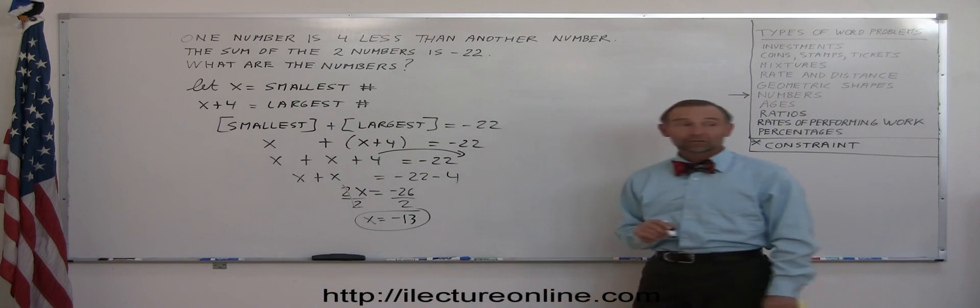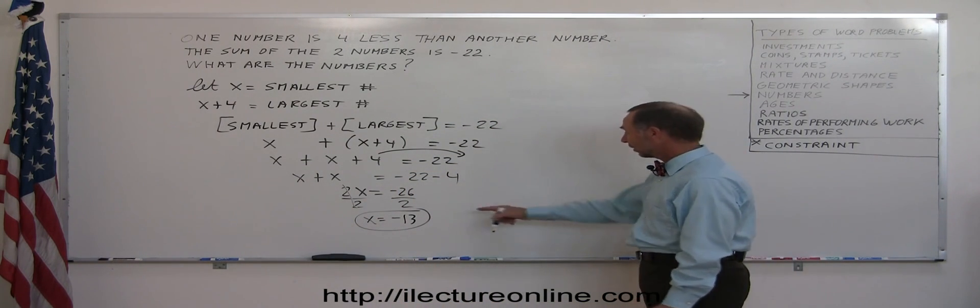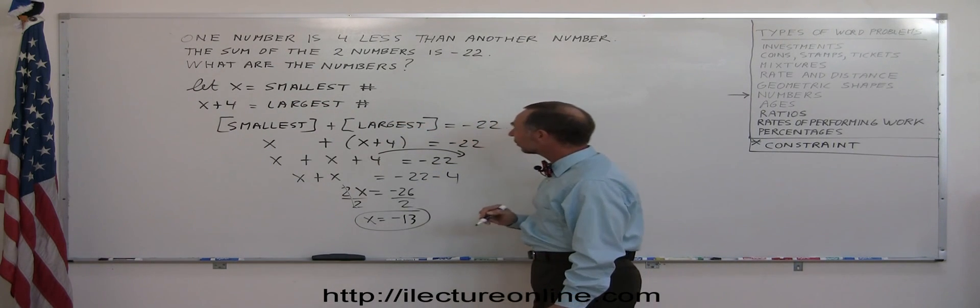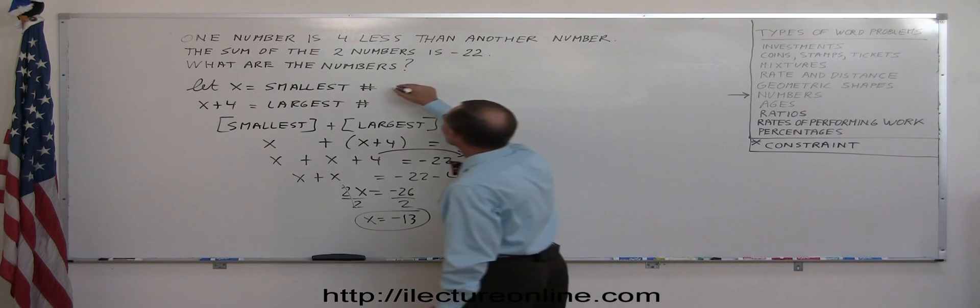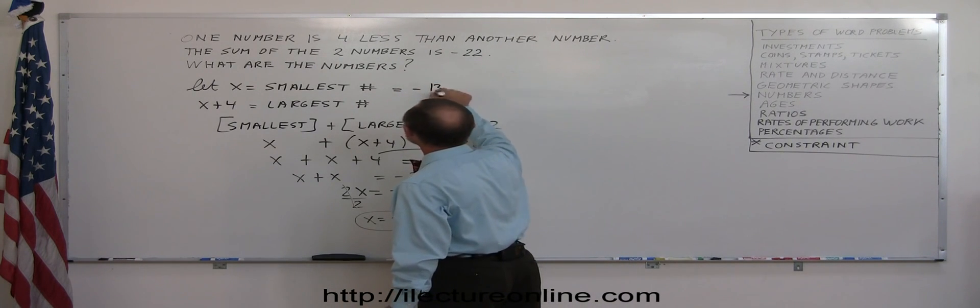Okay, now let's go back and define, let's see what we defined the numbers as. So since x equals the smallest number and x equals minus 13, the smallest number equals minus 13.